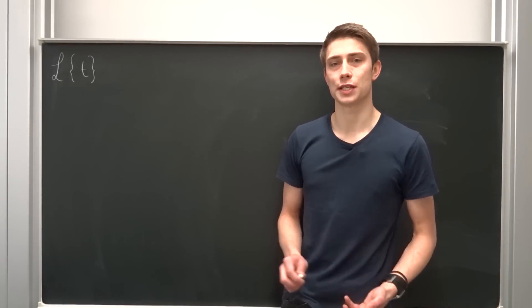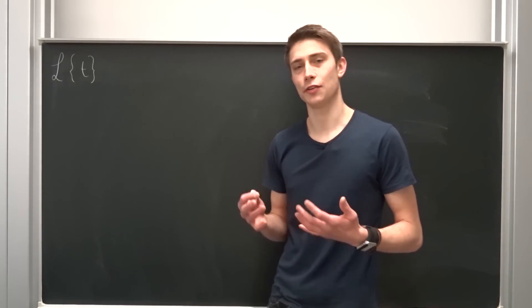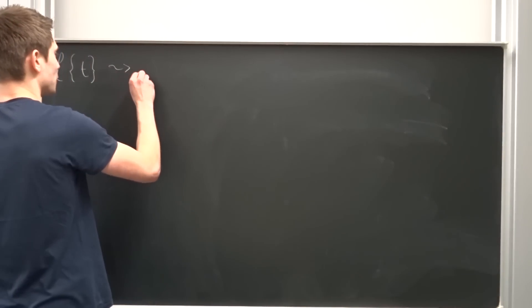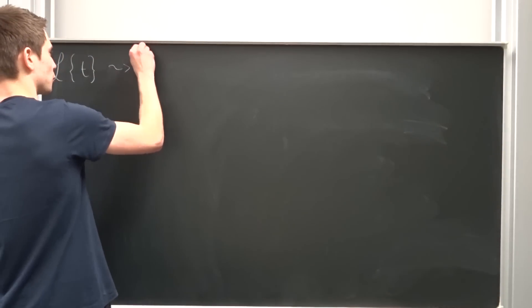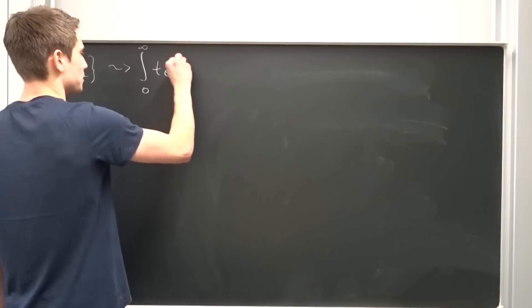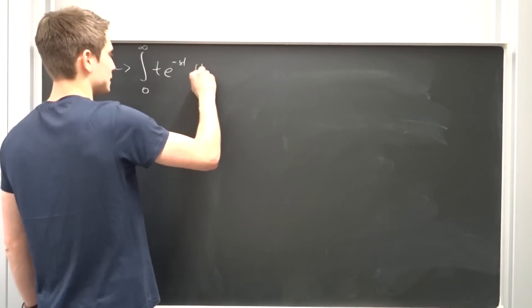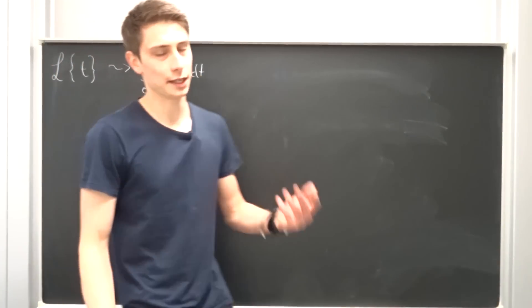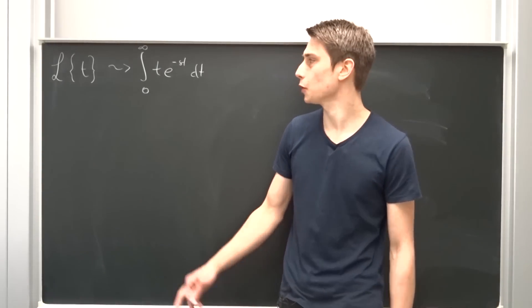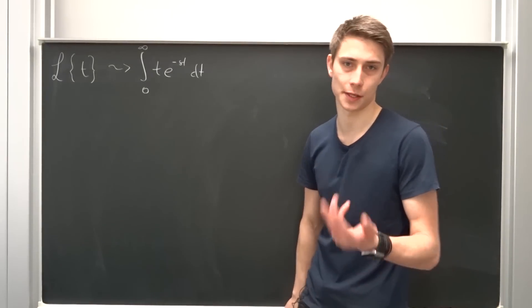Okay, so as always we want to apply the definition of the Laplace transform to this function. So right now this is just an improper integral from 0 to infinity of t times e to the minus st dt. And how can we integrate this? Well, integration by parts is the best choice here.